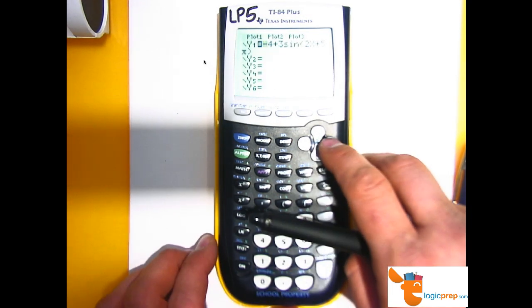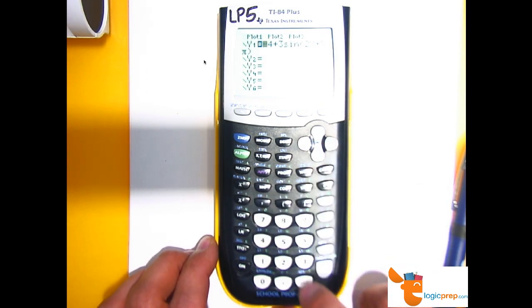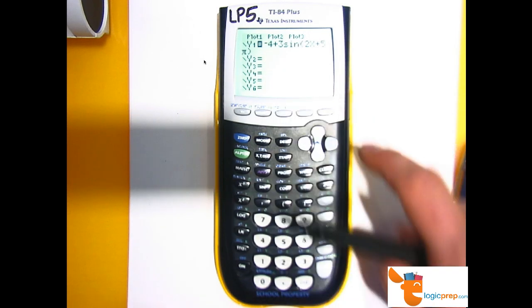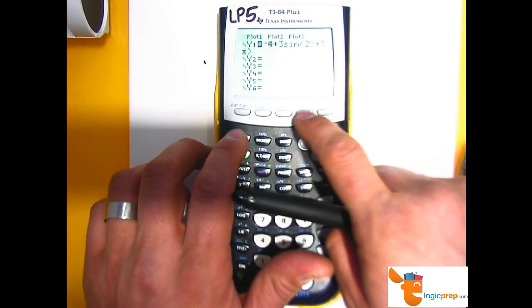And I must have typed in something wrong. Negative 4 plus, oh, I put, I should put minus 4. Negative 4, not minus 4. So now I'm going to go to zoom trig.